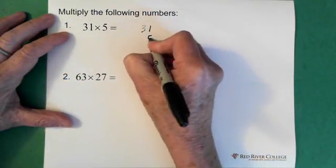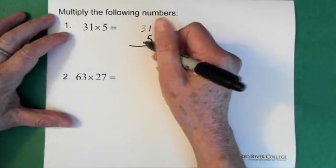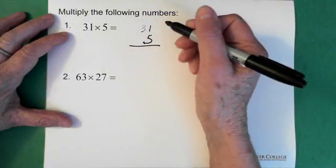So 31, and normally what I do is I put the smaller number on the bottom because it just makes it a little easier.